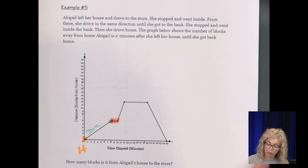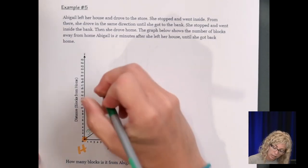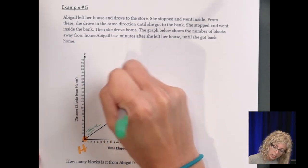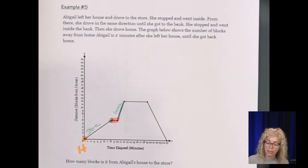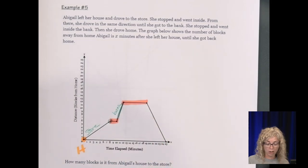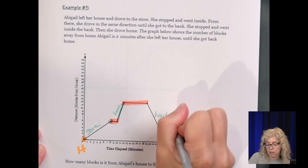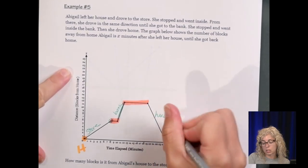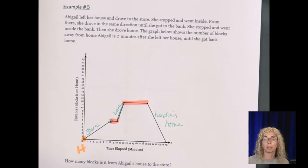So here she drove to the store. So here's where she is driving to the store. She arrived at the store. Right? She's not moving because she's inside. There she's going to go to the bank. Here's where she's going to the bank. She's getting further from home. And then she stopped and went inside the bank. So she's in the bank for a while. And then she's heading home. So the number of blocks she's away from home is decreasing because she's making her way back.